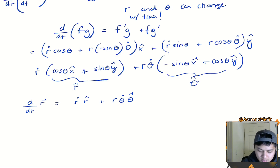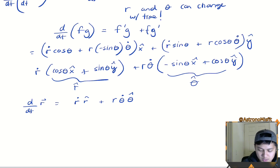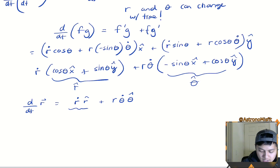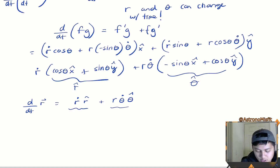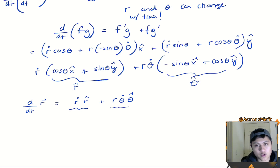That is the first derivative of the r vector. We still need the second derivative of the r vector to get Newton's second law. The r-dot r-hat term is the radial component — how fast velocity is changing in the radial direction — and r theta-dot theta-hat is how fast velocity is changing in the angular direction. Since the derivation will go on a bit longer, I'll end this part now and come back for the second derivative in part two. I hope you enjoyed this video and found it useful for thinking about these new unit vectors. See you in the next part!